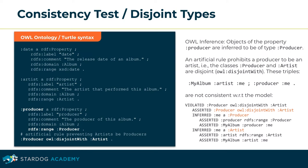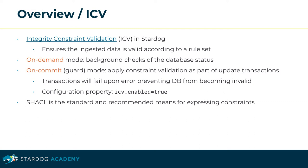The recommended way of implementing quality assurance in Stardoc is its Integrity Constraint Validation (ICV) feature. It ensures the database is valid according to a rule set. Depending on the mode, ICV may test the database on demand — for example, performing an extensive background check on a regular schedule. Or alternatively, apply constraint validation as part of update transactions with the guard mode enabled. The transaction will fail upon a validation error and prevent invalid data from entering the database.